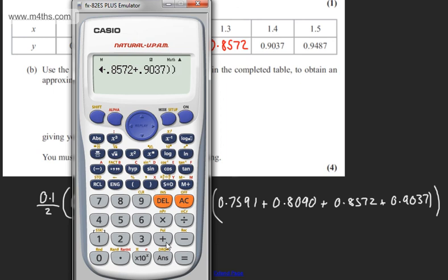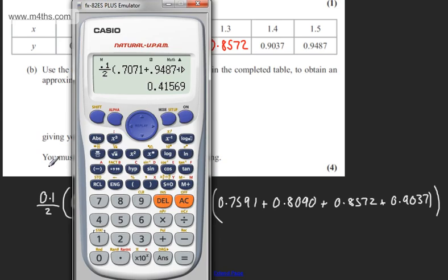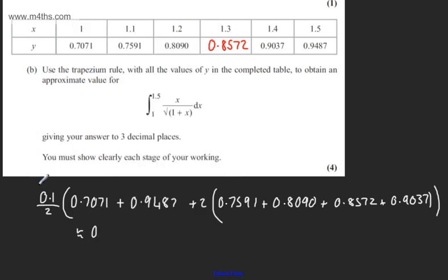If we close the bracket off, that's going to give us 0.41569. We need to give this now to three decimal places. Therefore, we're going to have 0.416, and that's given to three decimal places.